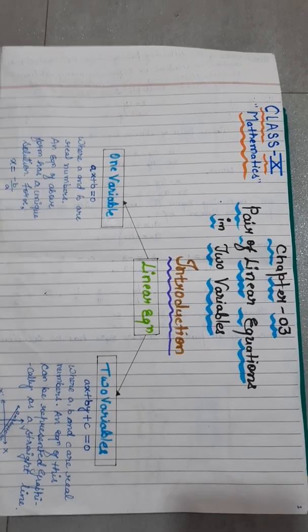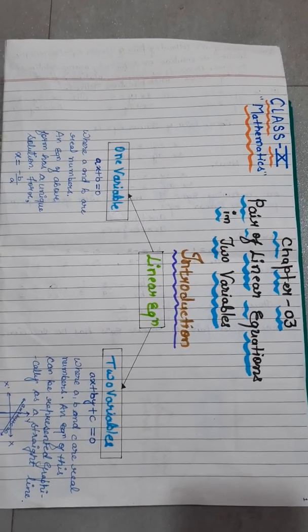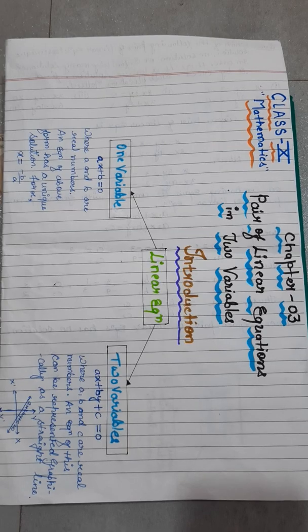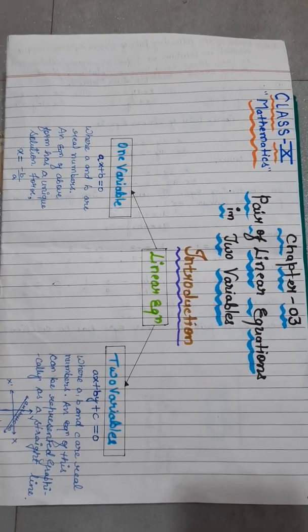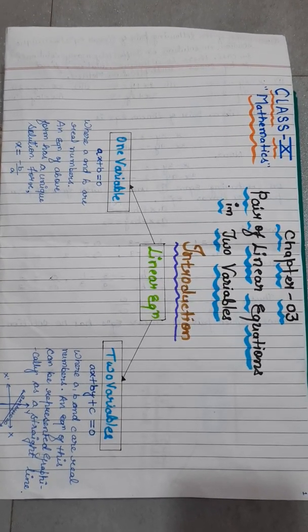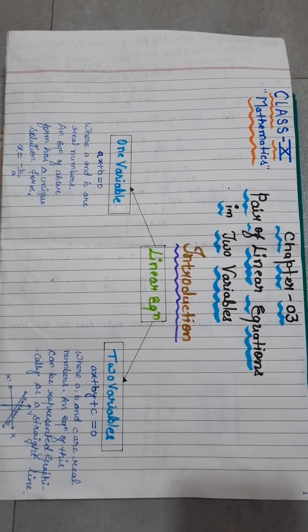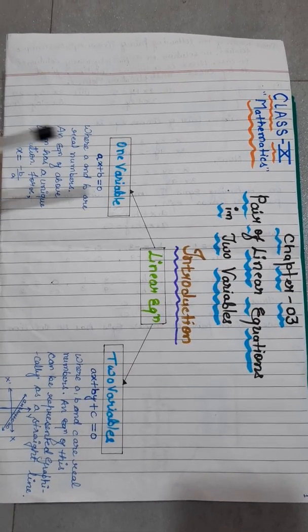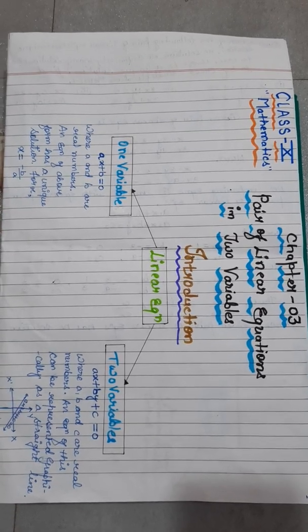Today we are going to study Chapter 3, i.e., pair of linear equations in two variables. In this we will discuss about linear equations. There are two types of linear equations: first is one variable and second is two variable.